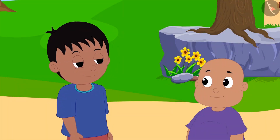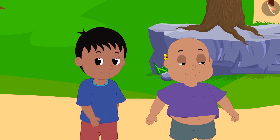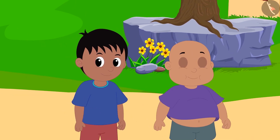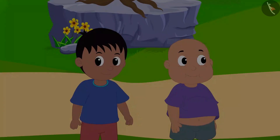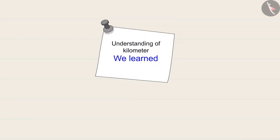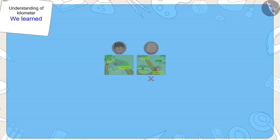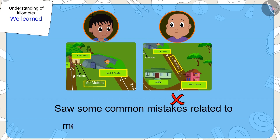Bablu finally understood Raju, and both of them went to play at Chanda's house. Kids, in this video we saw some common mistakes related to measuring distances in kilometers.